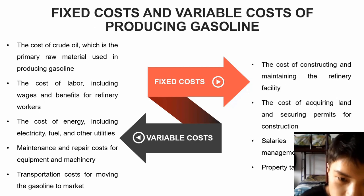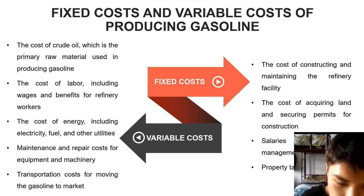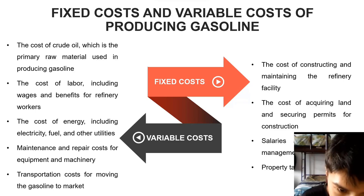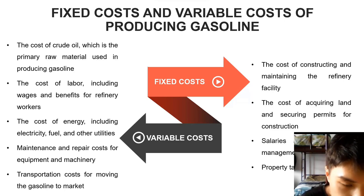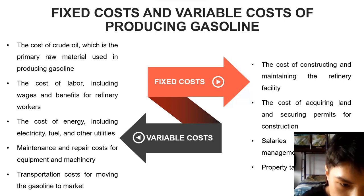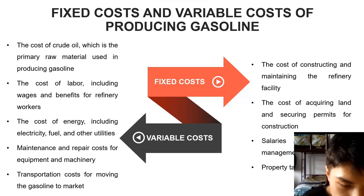Let's talk about the fixed costs. First is the cost of constructing and maintaining the refinery facility. Second is the cost of borrowing land and obtaining permits for construction. Next is the salary and benefits for staff, and we also have to pay taxes and insurance. Regarding variable costs, these are expenses incurred by the refinery in direct proportion to the level of gasoline production. First is the cost of crude oil, the raw material used in producing gasoline. Next is the cost of labor, including wages and benefits for workers. Then the cost of energy — electricity and fuel used to produce petroleum. Finally, repair costs for equipment and transportation costs for moving refined gasoline to market.